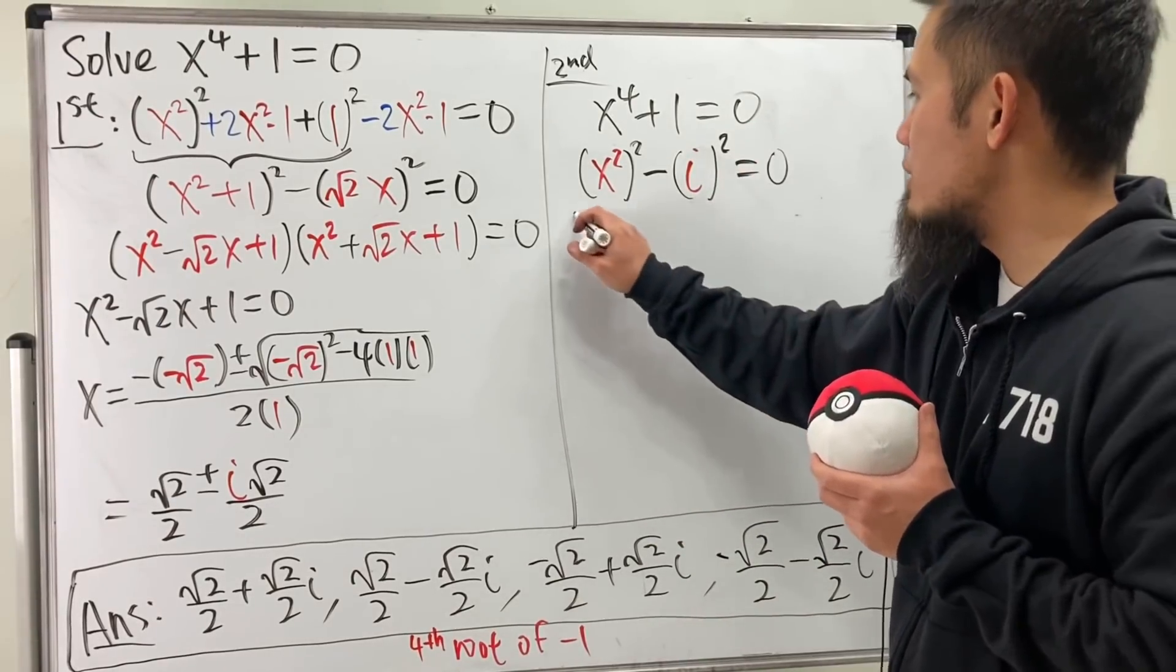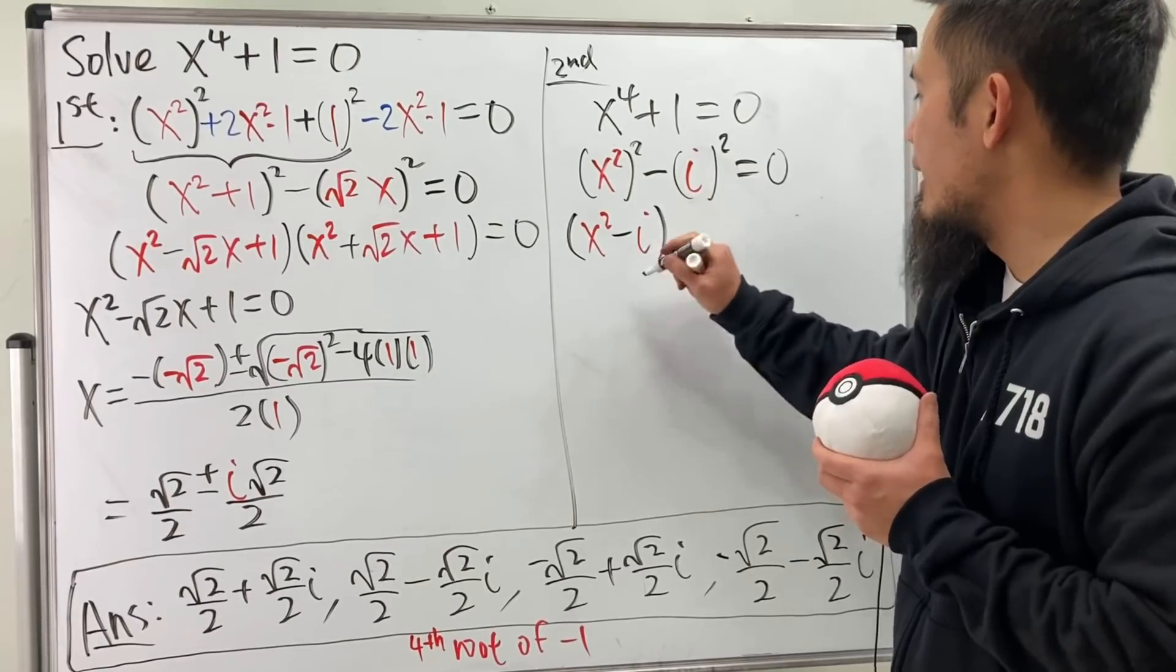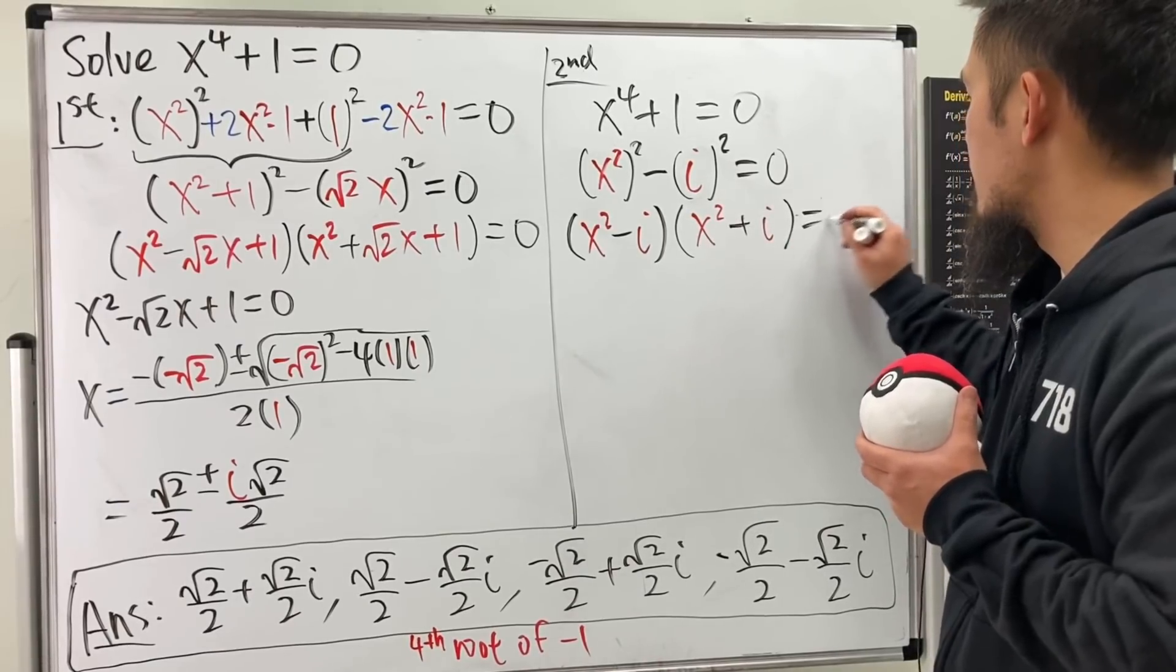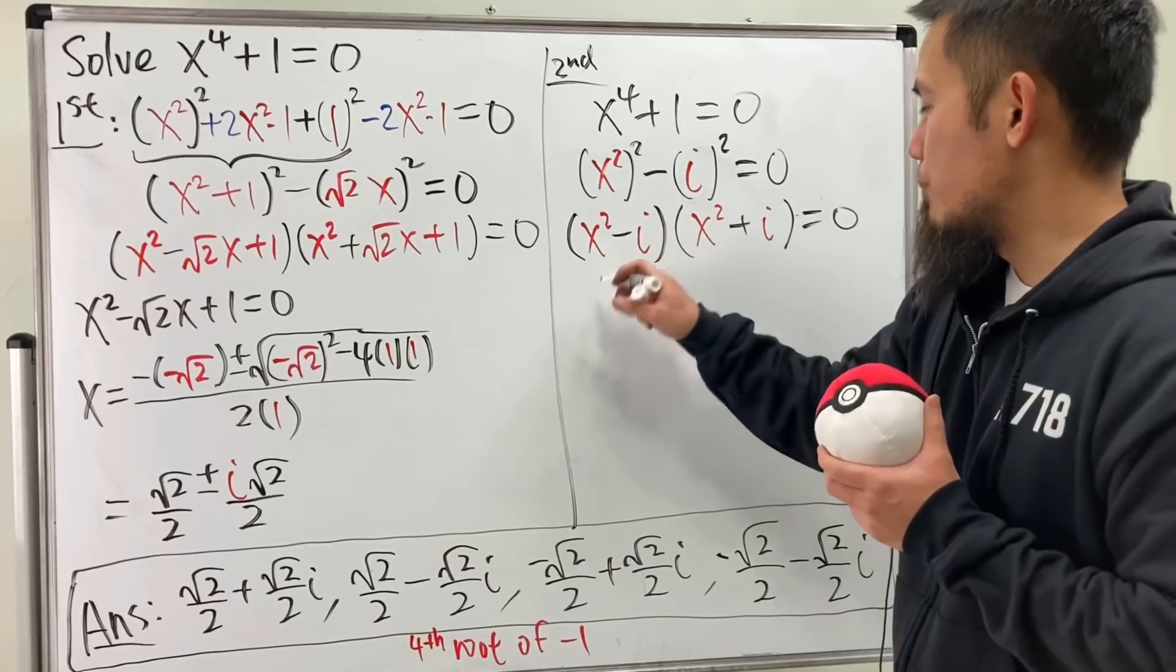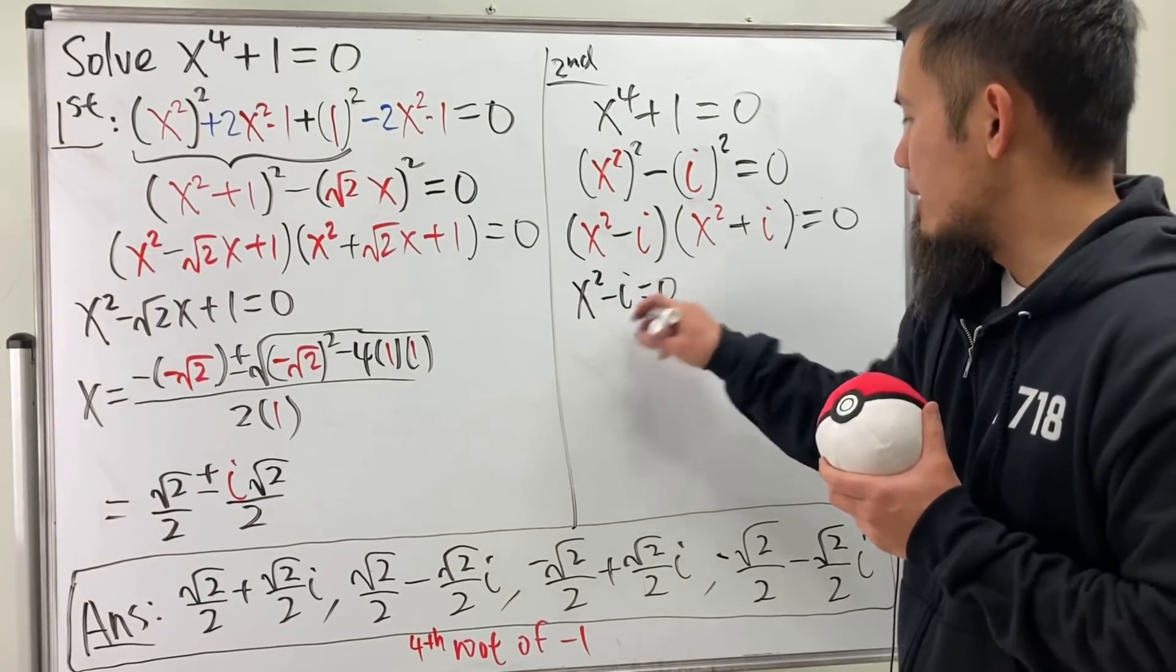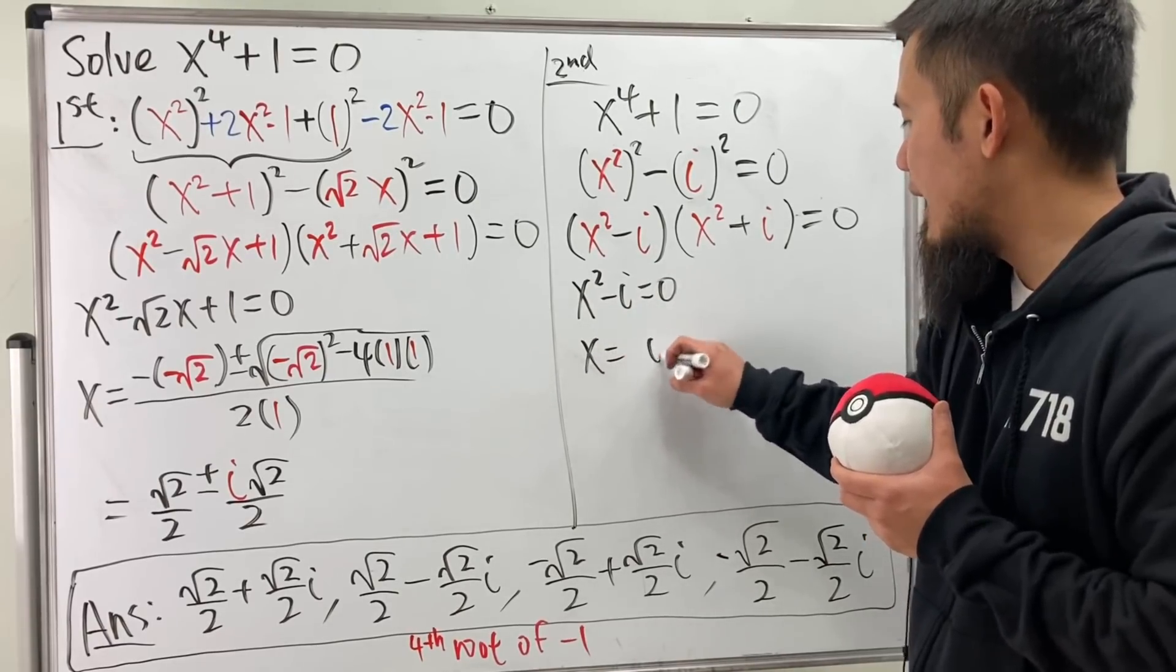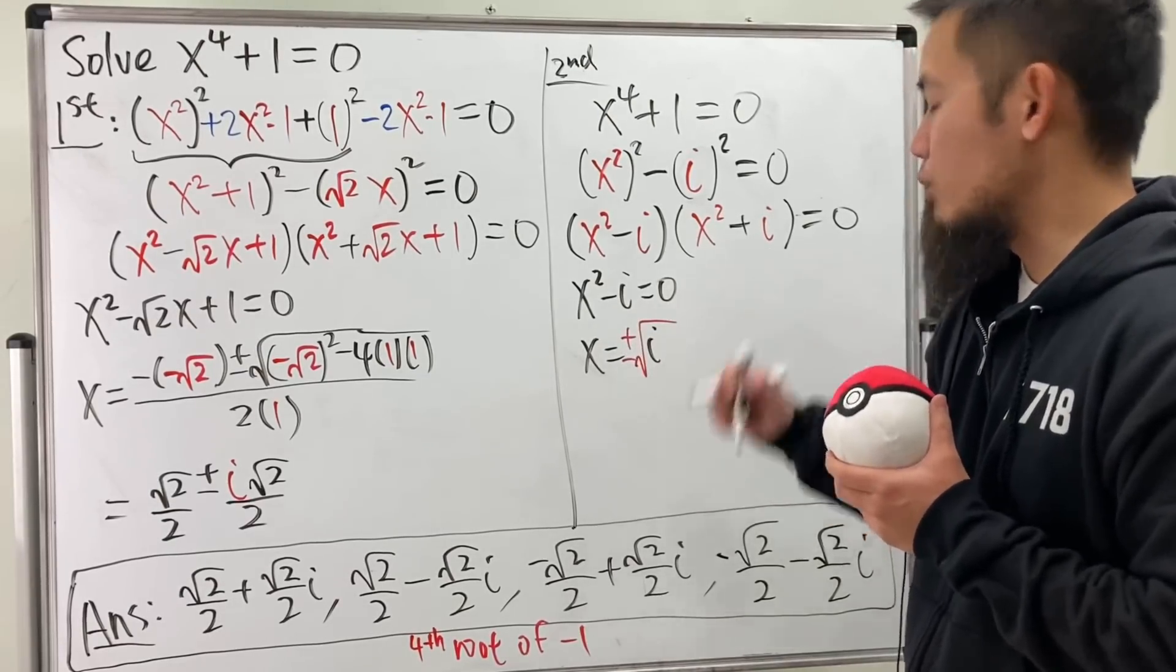Now, difference of two squares, we can factor it really nicely. x squared minus i, and then x squared plus i. That's equal to zero. Well, they are quadratic, so now we can just put this to be zero. So x squared minus i is equal to zero. And then, move this to here. So we get x squared equals i. Take the square root on both sides. And don't forget the plus or minus. So that's what we have.